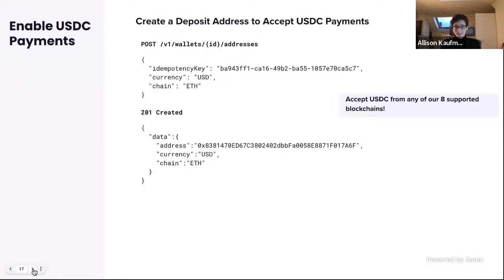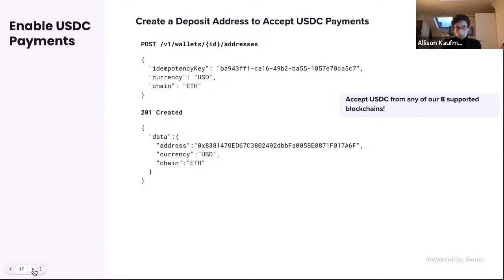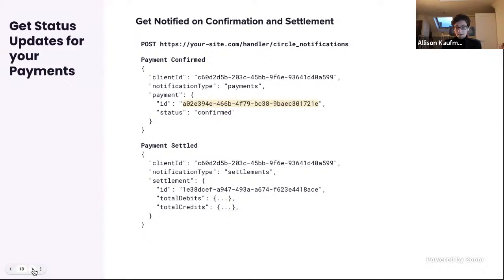For USDC payments, this is a straightforward part of the integration — you simply append a unique deposit address to your Circle account master wallet. We recommend creating one address per user who requests one, so you can associate that deposit address directly with a user and know who initiated any incoming USDC. For example, this call creates an ETH deposit address on your account, allowing a user to send USDC on the Ethereum blockchain. You can append addresses across any of our eight supported blockchains, and I'll cover how you can also use your Circle account to do things like chain-swapping.